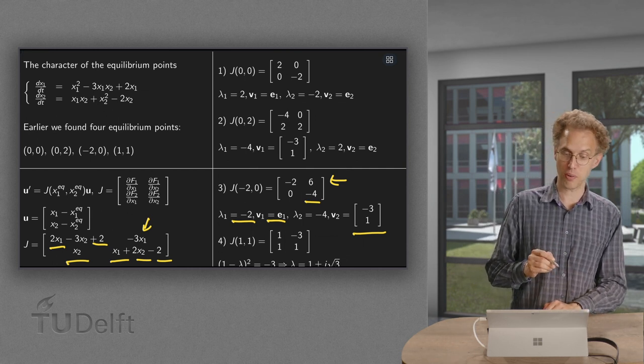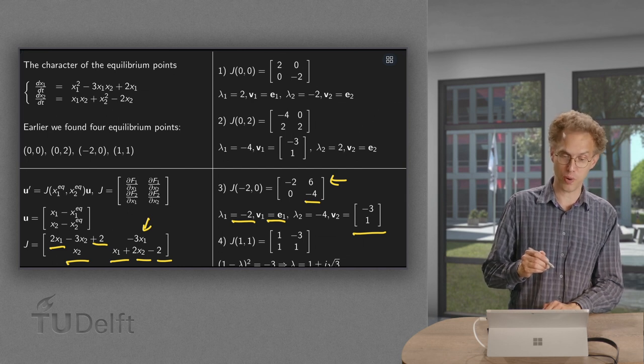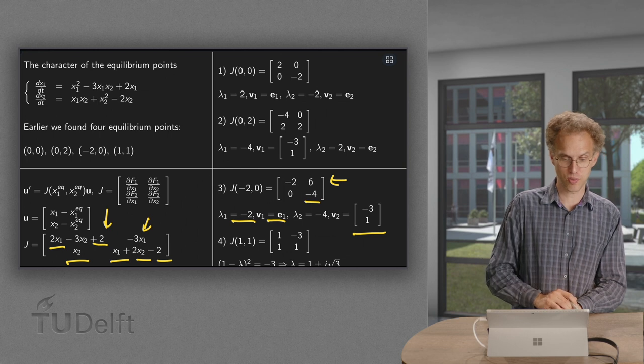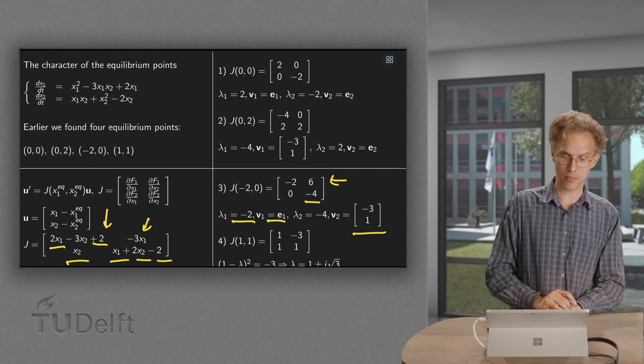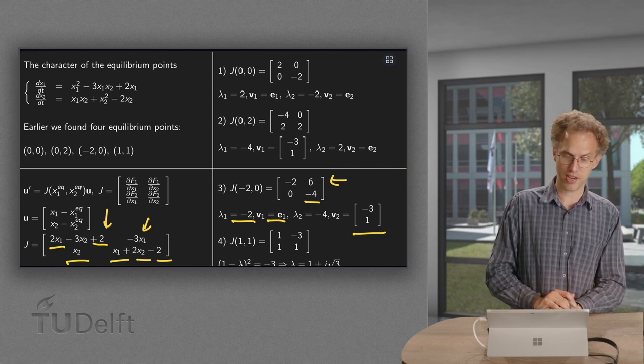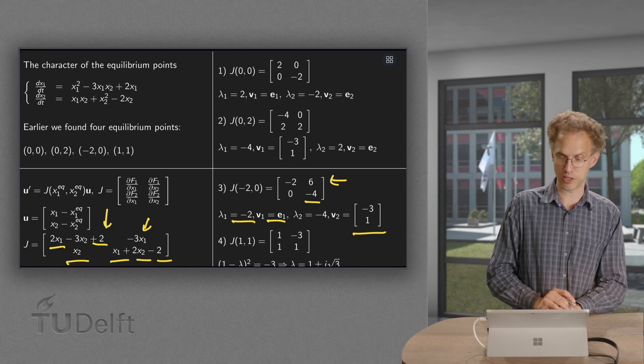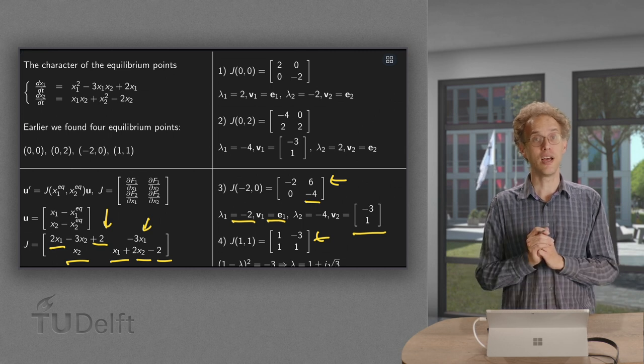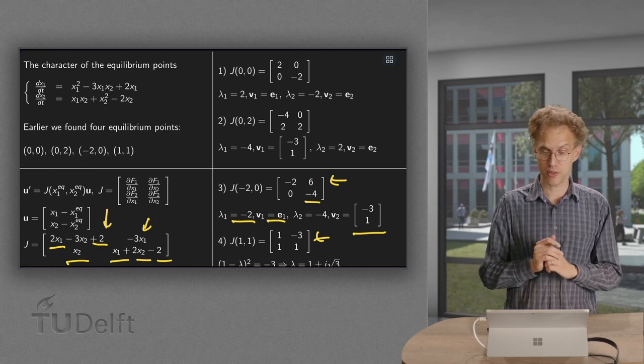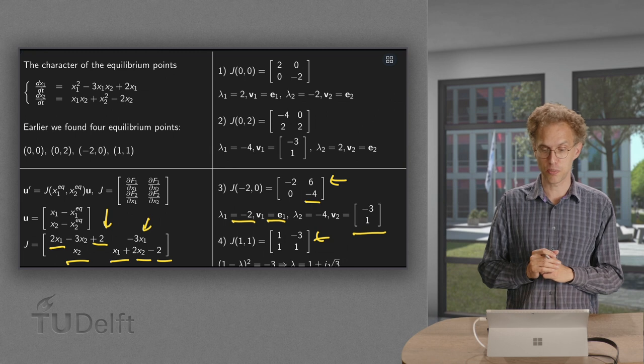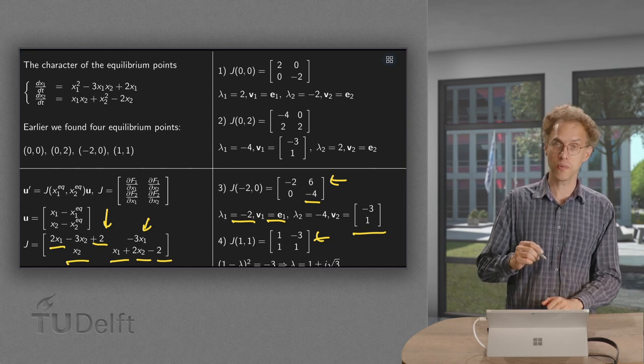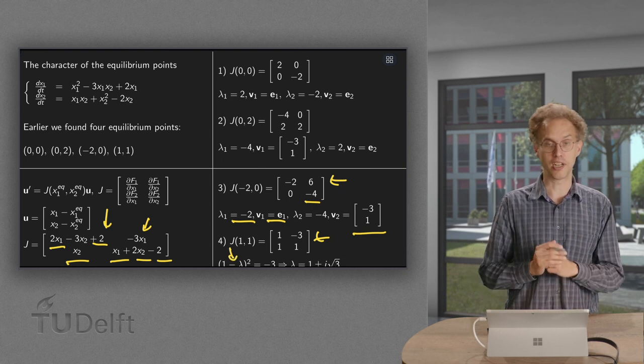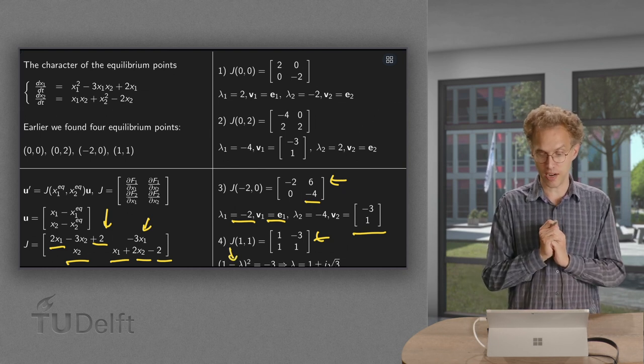This one is slightly more complicated. You have to plug in (1,1) in the Jacobi matrix. So x1 and x2 both equal to 1. So you get 2 minus 3 plus 2 equals 1. Then a -3, a 1, and 1 plus 2 minus 2 equals 1. So here we have our Jacobi matrix. Now we have to compute the eigenvalues. So we have to subtract λ times I2. This gives us 1 minus 1 minus 2 squared equals -3.